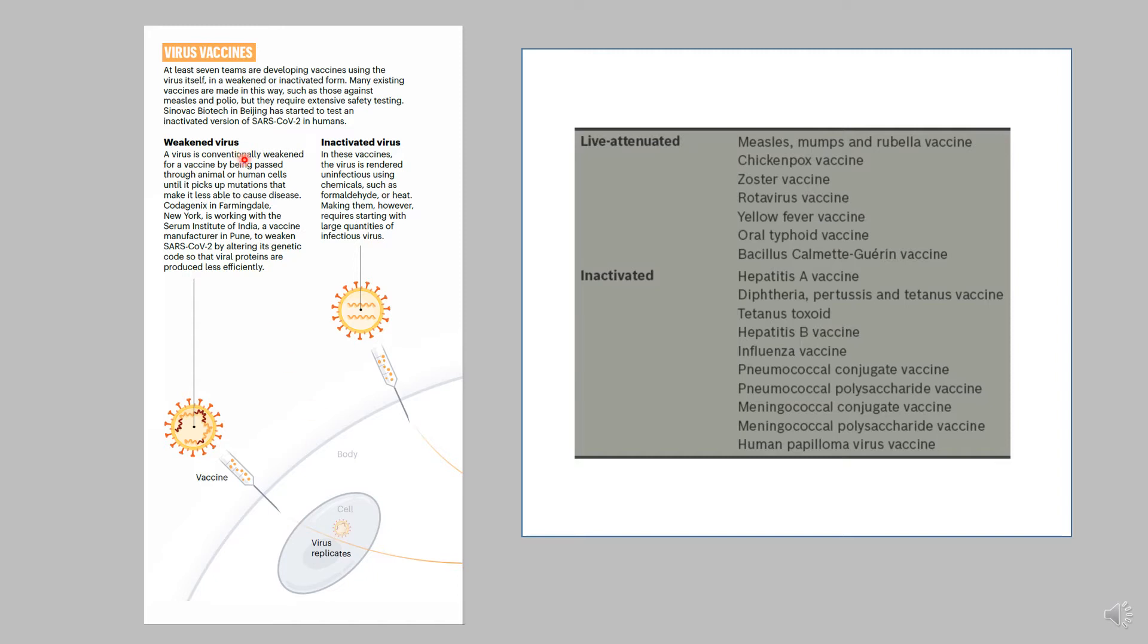We have very many effective live attenuated vaccines. These include the measles, mumps, and rubella vaccine, the chickenpox vaccine, BCG, which is given to many people in Asia, yellow fever vaccine, and the disease that I study, dengue hemorrhagic fever. The dengue vaccine in clinical trials is also a live attenuated vaccine.